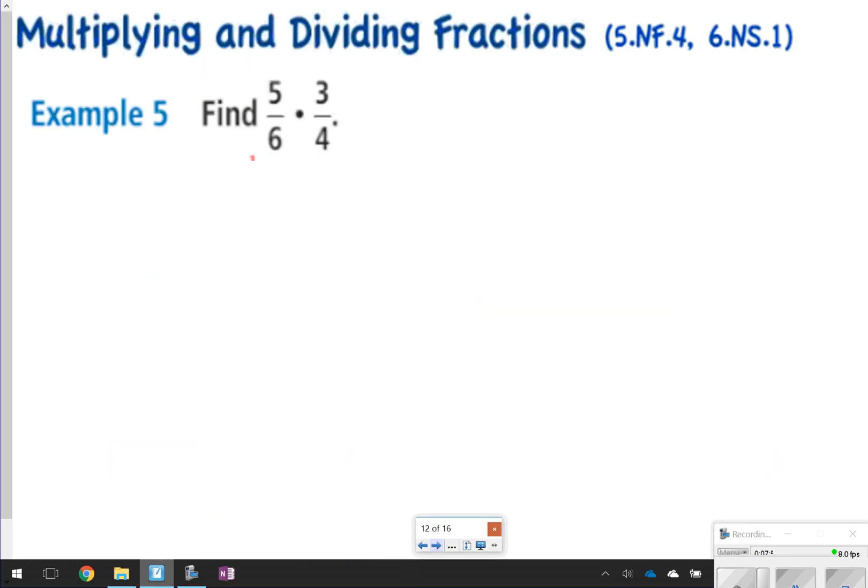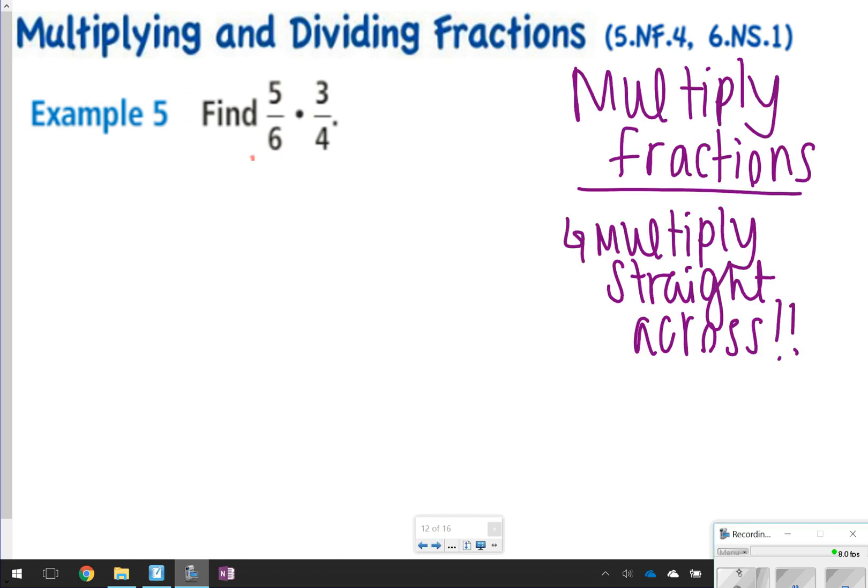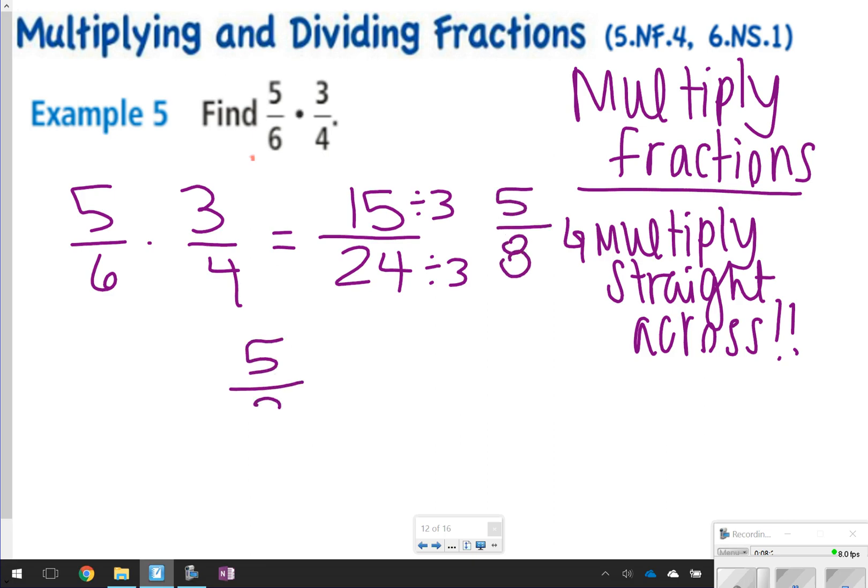The last two things we're going to talk about is multiplying and dividing. With multiplication, you're just going to multiply straight across. So literally, I take 5 sixths and multiply it by 3 fourths. I multiply the top numbers. 5 times 3 is 15. I multiply the bottom numbers. 6 times 4 is 24. And then you just always need to make sure you can simplify. 15 and 24 do have something in common. That number is 3. 15 divided by 3 is 5. 24 divided by 3 is 8. So my answer here would be 5 eighths.